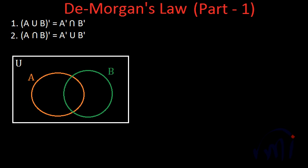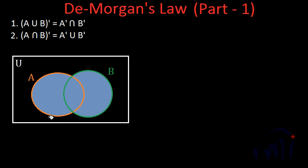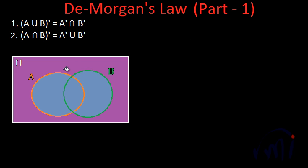You can see a Venn diagram on the screen. The rectangle represents the universal set. Set A is represented by the orange circle and set B is represented by the green circle. A union B is this combined area. The complement of A union B will be the remaining area of the universal set — that means this area will be the complement of A union B.